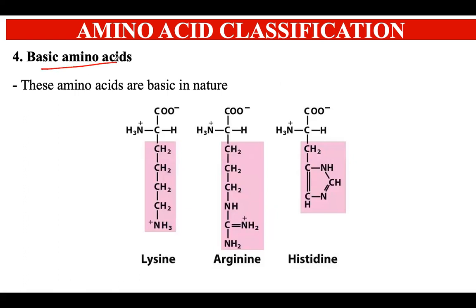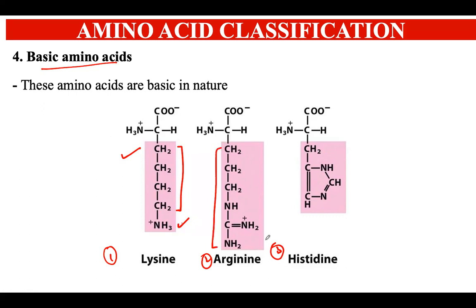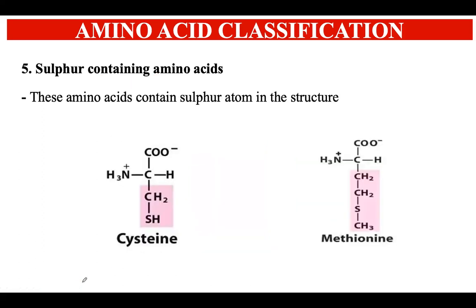Next are the basic amino acids. If there is an extra amino group or basic group present in the R chain, those become basic amino acids. There are three examples: lysine, arginine, and histidine. Lysine has a four-carbon chain in the R group along with an extra amino group. Arginine has two extra basic groups. Histidine has a ring-like structure in the R group.